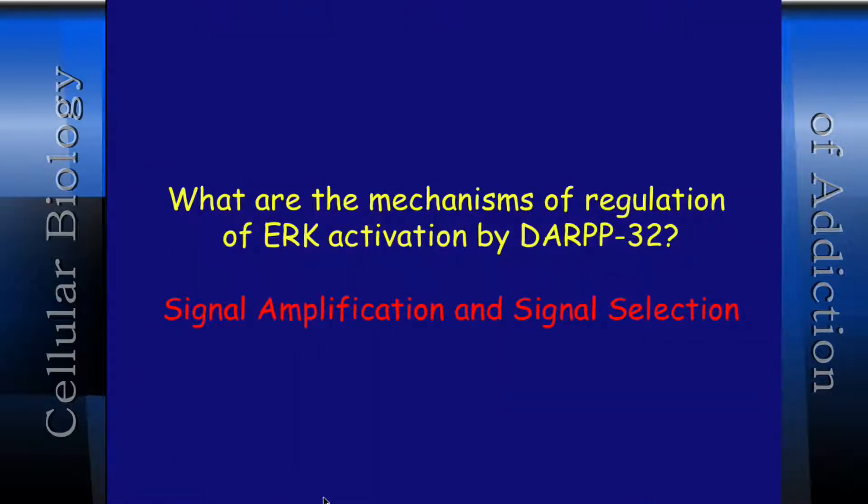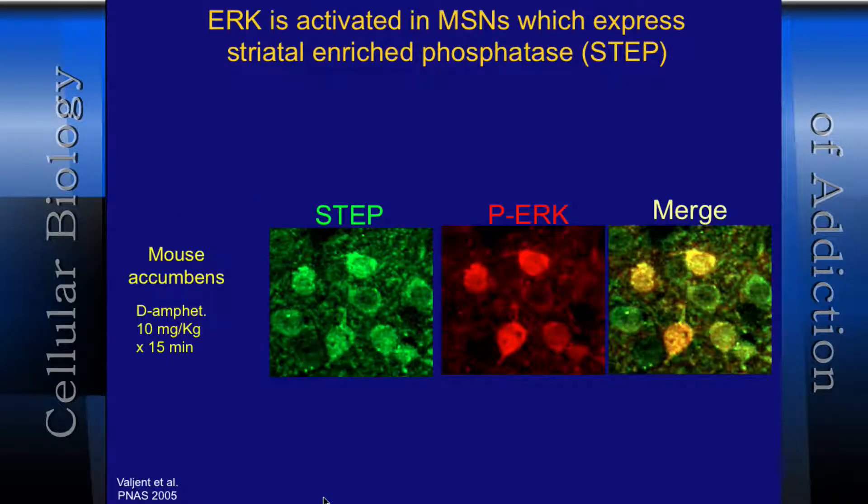But what are the mechanisms in detail? This part of the presentation is about signal amplification and signal selection. I need to introduce another player. We work on an enzyme called STEP — striatal-enriched tyrosine phosphatase. This is a tyrosine phosphatase selective for tyrosine residues. STEP is so-called because it's very abundant in the same medium-spiny neurons as these other signaling pathways.